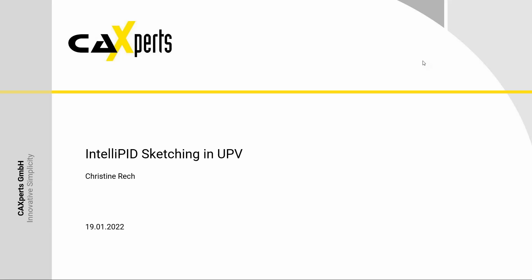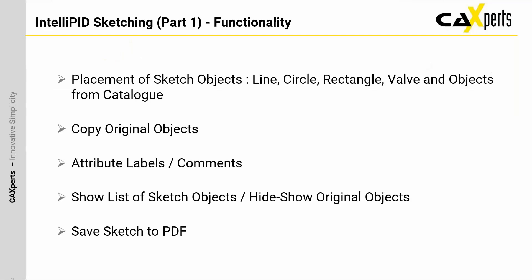Today I'm going to discuss IntelliPIT sketching. I'm going to start with the description of the functionality and a few slides. The first one will be about the placement of regular objects like circle, valve, etc., but also the placement of objects from the catalog. In addition, we also allow the user to copy original objects which come from the source data, for instance Smart PID or PDF PIDs which have been converted to UPV. It is also possible to place labels and comments on top of these objects so that you have the corresponding text information necessary for those changes.